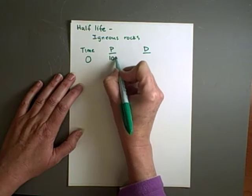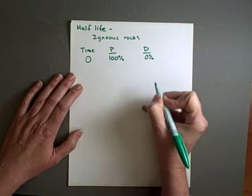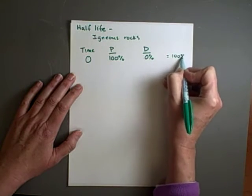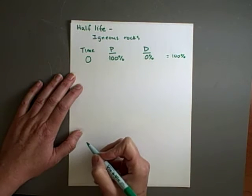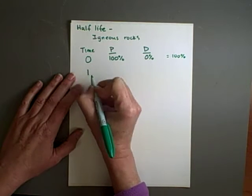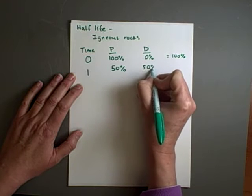At time zero, I'm going to have 100% parent, 0% daughter. Now you guys, this is always going to add up to be 100. So we're going to be looking at the ratio of parent to daughter. So half-life is the time it takes 50% of the parent to break down to form daughter. So after one half-life, it's 50-50.